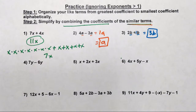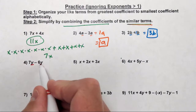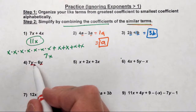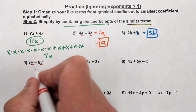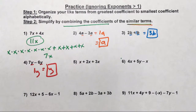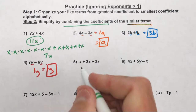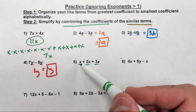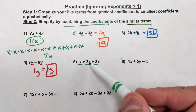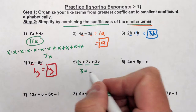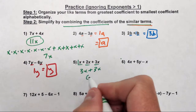For problem 4, we have 7y minus 6y. 7 minus 6 is 1y, but we don't need the 1 in front — it's implied — so the answer is just y. Now problem 5 gets a little more challenging because I have 3 terms: x, 2x, and 3x. These are similar terms because they have the same variable and the same exponent. So 1x plus 2x is 3x, plus this last term 3x, and we end up with 6x.